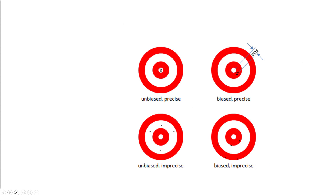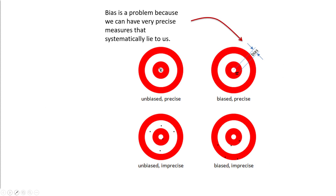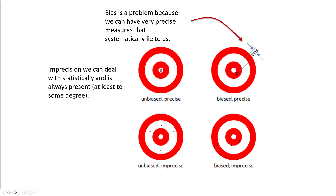When we're talking about bias, I find these little figures to be helpful. Bias is a problem because we can have very precise measures that systematically lie to us. If you look here, this is unbiased and precise — all of our shots are within the bullseye and very close together, so they're precise. Here we have very precise measures, but they're systematically off-center, off the truth.